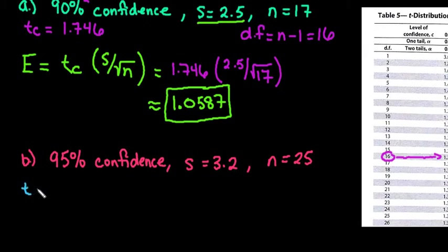So again, the first thing that we want to do is find our critical value t, and we always just put it as the positive value. So with this 95% confidence, we would come over to our table. And we also need to know our degrees of freedom. Degrees of freedom is going to be 25 minus 1, which gives us 24.